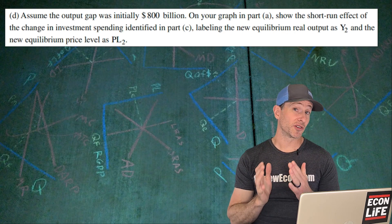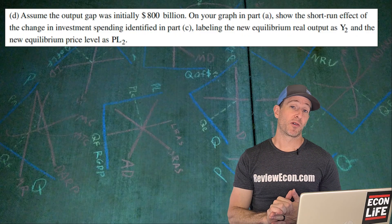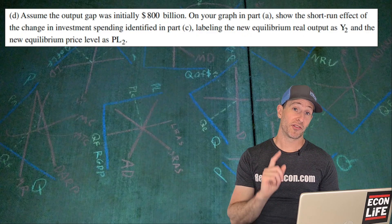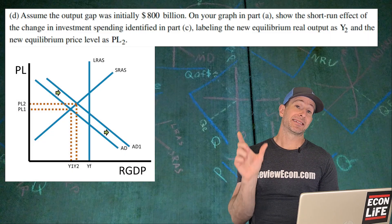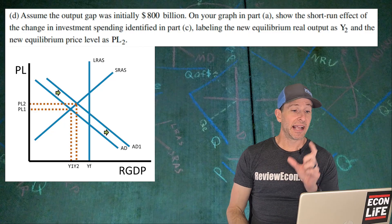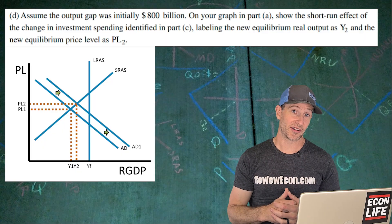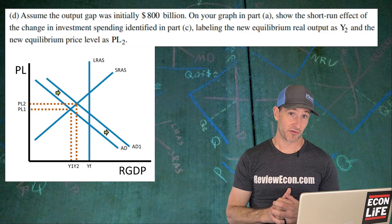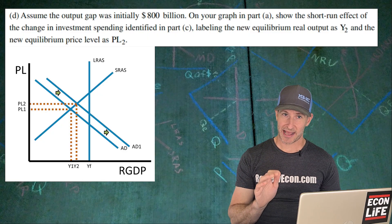For D, we're going to assume that the original recessionary gap was $800 billion. We're going to show the impact of that investment spending change on the ASAD model, putting that back on the graph we already drew in part A. The AD curve is going to shift to the right here, but because the gap is $800 billion and we only had a change in real GDP of $200 billion, it's not going to actually close the gap. The gap would still be at least $600 billion worth of recessionary gap. You should not go all the way back to long run equilibrium.